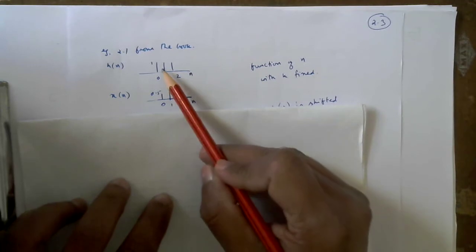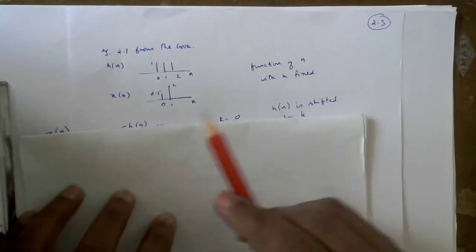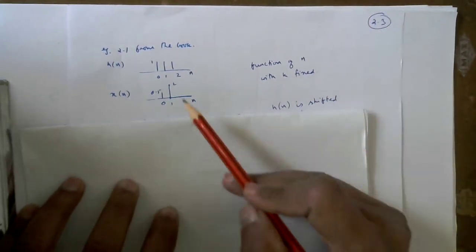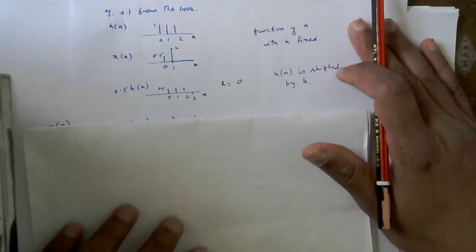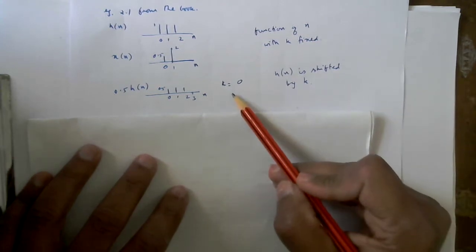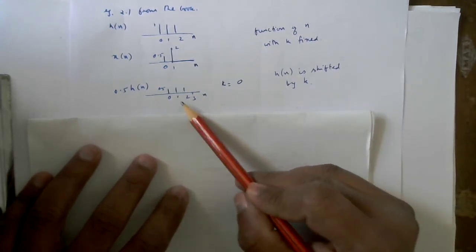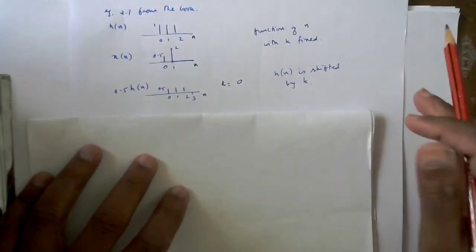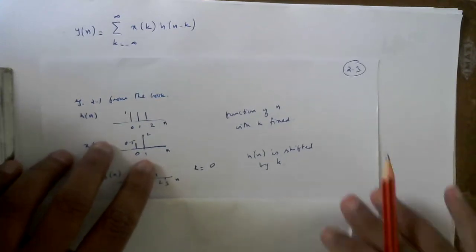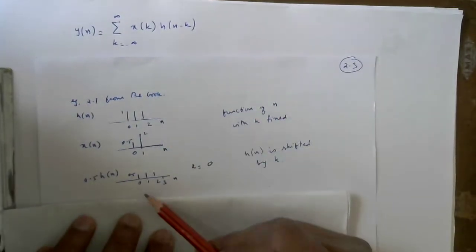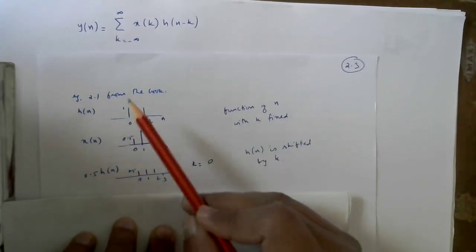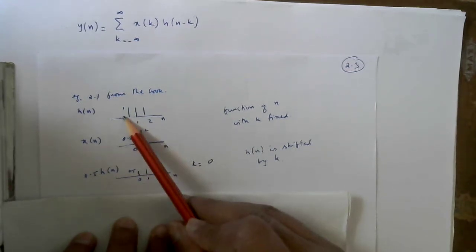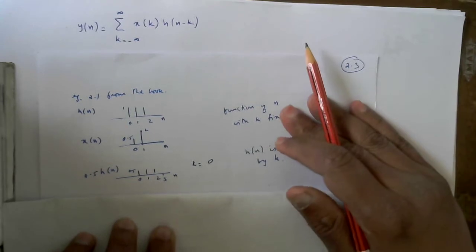This is my unit impulse response function h(n), and this is my x(k) — my input with values 0.5 and 2, the same input as before. Both of these are functions of n. When k is equal to 0, we do not shift h(n), because in the convolution sum the term is h(n minus k), and with k=0 there is no shift. So h(n) will appear here, scaled by x(0), which is 0.5.